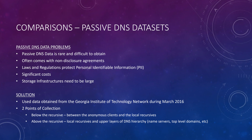Laws and regulations exist to protect personal identifiable information. If you are able to get some of these data sets, they have significant costs — not only for infrastructure to store the data, but also to ensure compliance with regulations protecting data security and preventing leakage of personally identifiable information. Instead of obtaining outside DNS data, they used data from Georgia Institute of Technology Networks during March 2016, with two collection points: below the recursive (between anonymous clients and local recursive DNS servers) and above the recursive (between local recursive servers and the upper layers of DNS hierarchy).